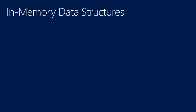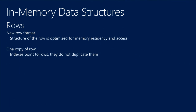We have new in-memory data structures — a completely new row format where the structure is optimized for in-memory access and residency. We have only one copy of each row. Indexes do not contain copies of any part of the data in the row. We don't have a concept of included columns. Even the hash indexes don't have a copy of the primary key — they just contain direct pointers to the row. This also means that every index is covering.